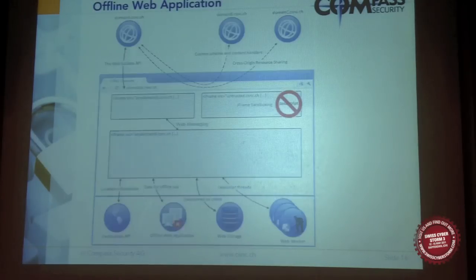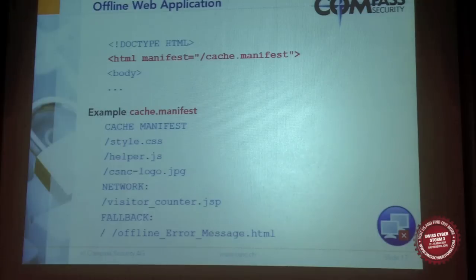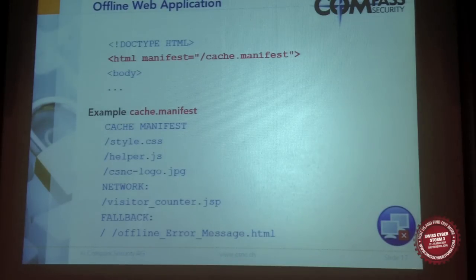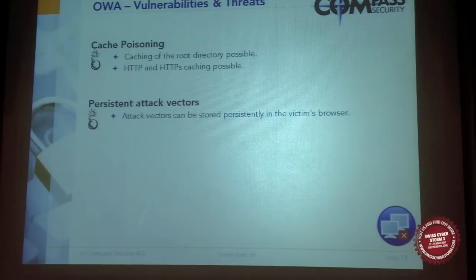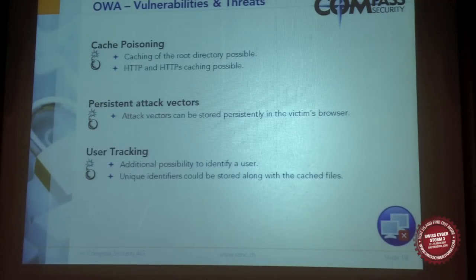The next feature is the offline web application, which allows web applications to store themselves completely offline. Previously it was difficult to create a web application that works without an internet connection. Now you can define a file called a cache manifest where you specify which resources need to be stored offline. The big difference is you can now store the root directory as well, including HTTPS resources. This makes cache poisoning vulnerabilities more effective, and it's another possibility to store persistent attack vectors. User tracking is also a problem — you can store unique identifiers along with the cached application.